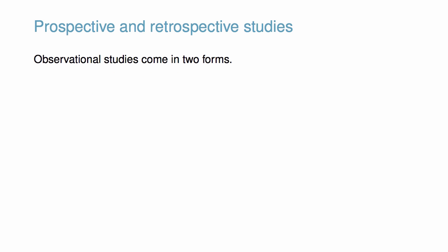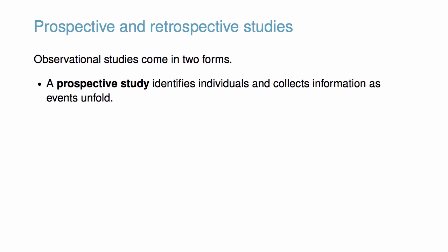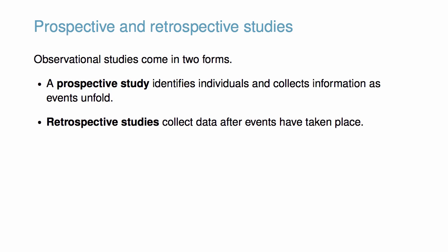Observational studies come in two forms: prospective studies and retrospective studies. A prospective study identifies individuals and collects information as events unfold. On the other hand, retrospective studies collect data after events have taken place. In either case, selecting a sampling strategy will be an important part of designing the study.